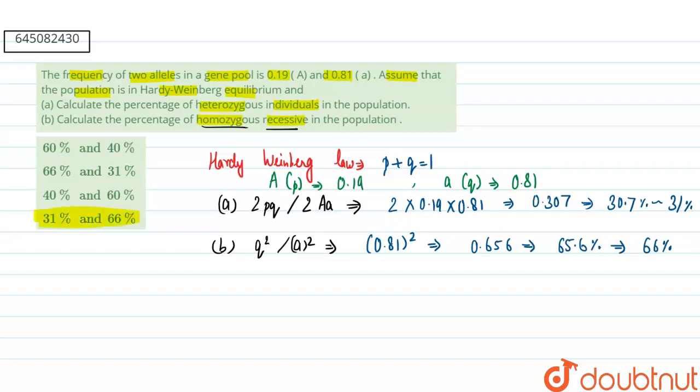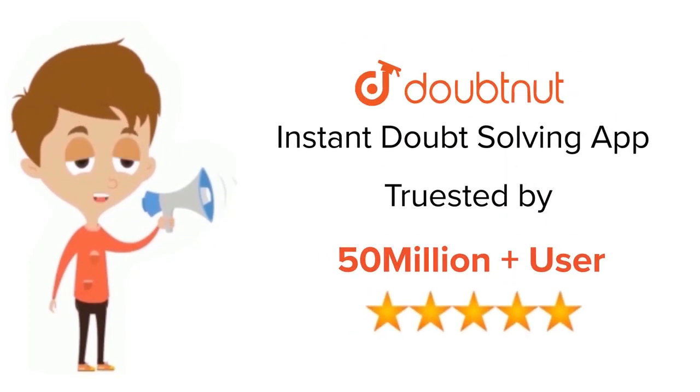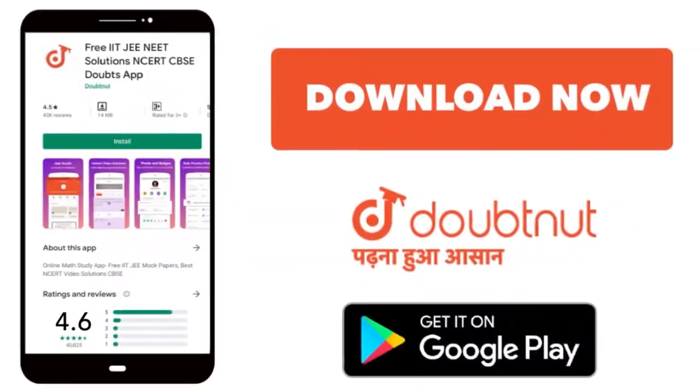So if we are talking about our answers, our correct answer will be the fourth option, that is heterozygous will be 31% and homozygous recessive will be 66%. I hope this answered your question. Thank you. For class 6-12, IIT-JEE and NEET level, trusted by more than 5 crore students. Download Doubtnet app today.